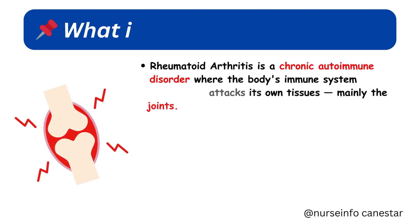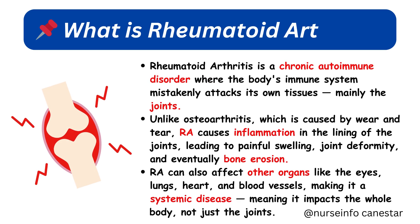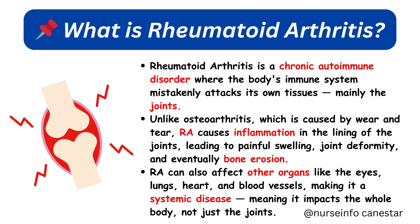What is Rheumatoid Arthritis? Rheumatoid arthritis is a chronic autoimmune disorder where the body's immune system mistakenly attacks its own tissues, mainly the joints.